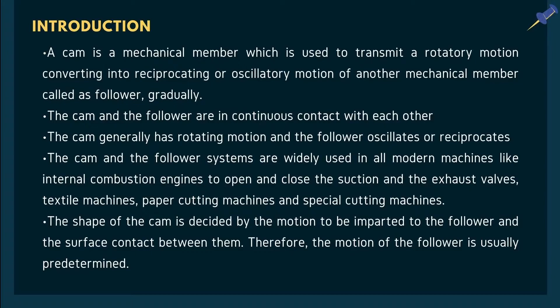Let's start with the introduction. CAM is a mechanical member which is used to transmit rotary motion, converting it into reciprocating or oscillatory motion of another mechanical member called a Follower. They are in contact with each other. CAM and Follower systems are widely used in modern machines like internal combustion engines, textile machines, paper cutting machines, and special cutting machines. The shape of the CAM is decided by the motion to be imparted to the follower, and the follower's motion is usually predetermined.